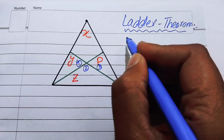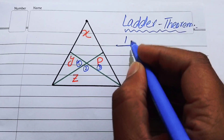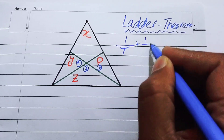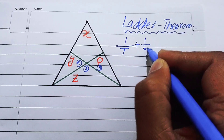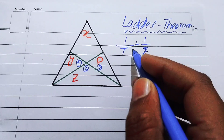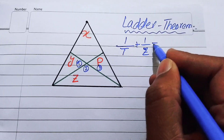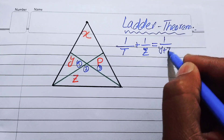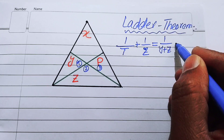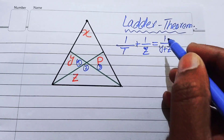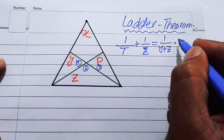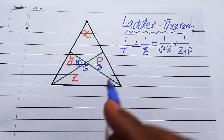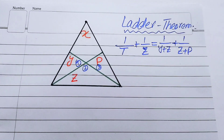The formula of the Ladder Theorem is: 1 over t plus 1 over z equals 1 over (y + z) plus 1 over (z + p).